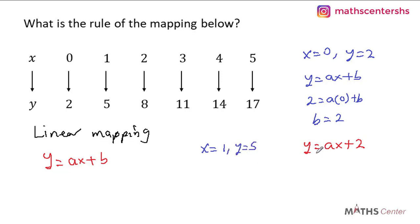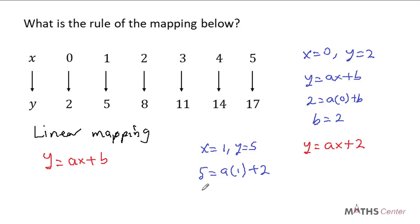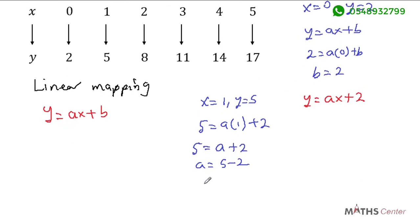Substituting, when y is equal to 5 and x is equal to 1, we have 5 is equal to a times 1 plus 2. A times 1 gives us a, so 5 is equal to a plus 2. Therefore a is equal to 5 minus 2, which is 3. The value of a is 3. We now have a equal to 3 and b equal to 2, so our rule is y is equal to 3x plus 2. This is the rule of the mapping.